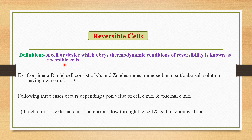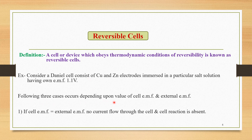To understand this concept clearly, we consider a simple Daniel cell. Consider a Daniel cell consisting of copper and zinc electrodes immersed in a particular salt solution having an EMF of 1.1 volts. In this Daniel cell, three different types of cases can take place depending upon the value of cell EMF and external EMF.